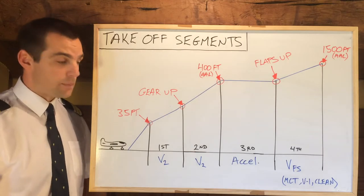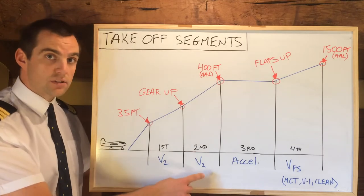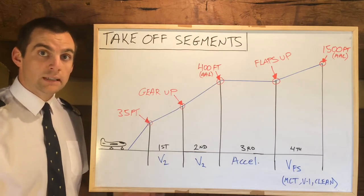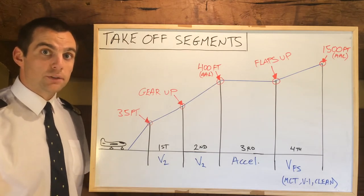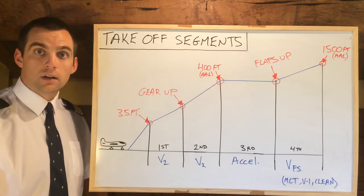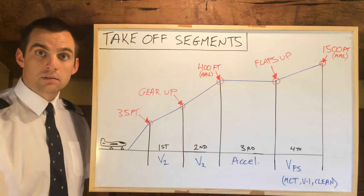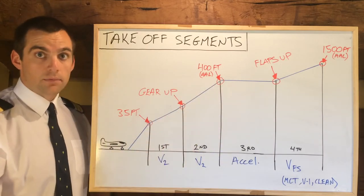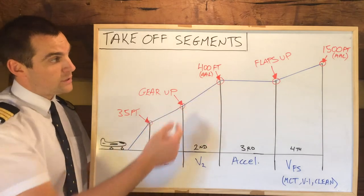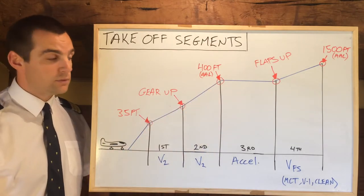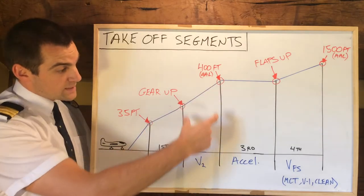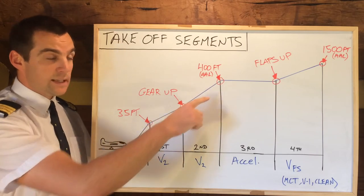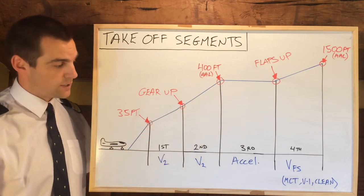We keep climbing at V2 until 400 feet. This is above aerodrome level — that would be a minimum altitude. Each company will have their established altitude. In my company, for example, our MFRA — minimum flap retraction altitude — is actually 1,000 feet above aerodrome level. So that would be the second segment. We continue our climb until a safe altitude, minimum flap retraction altitude.